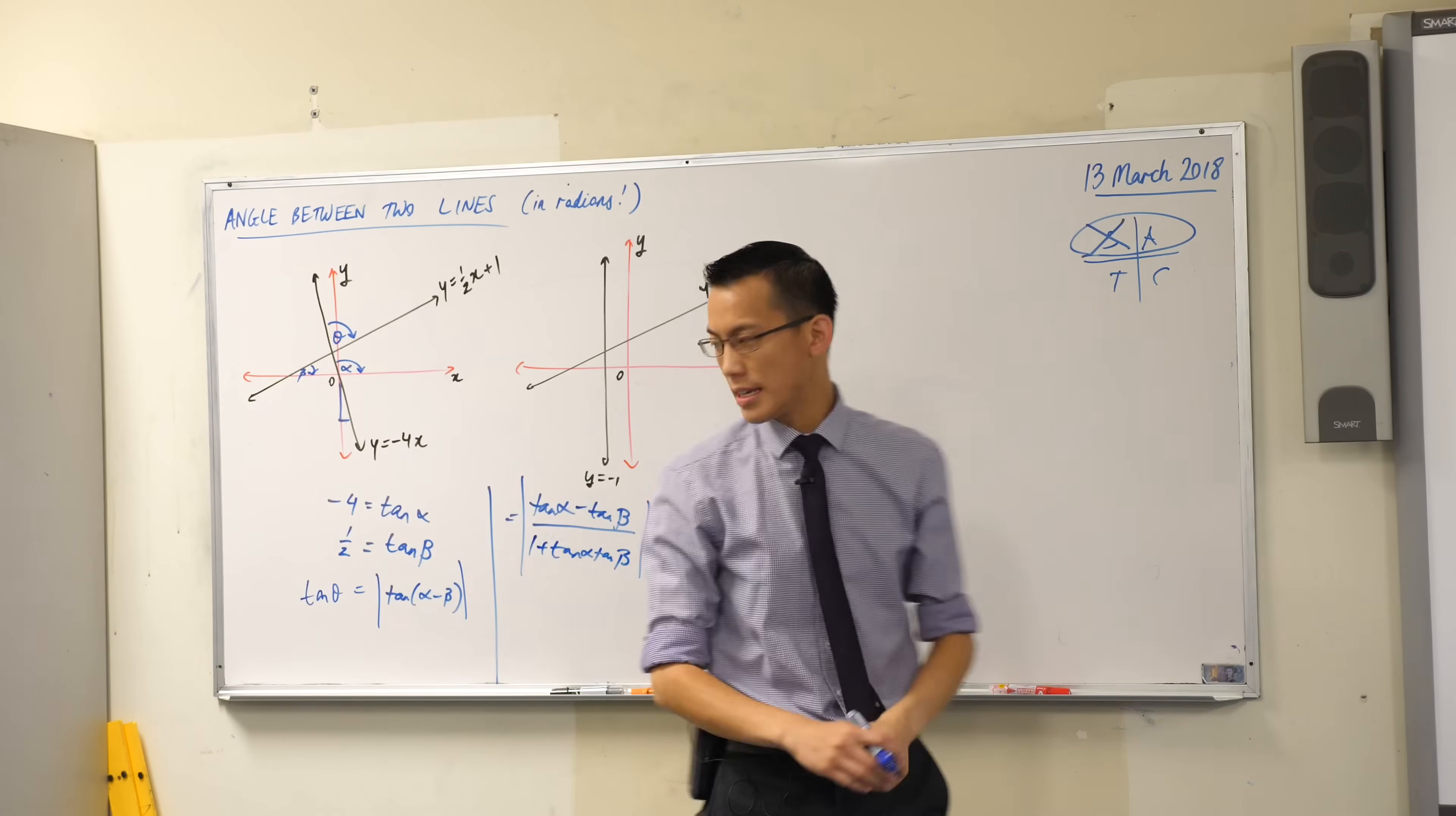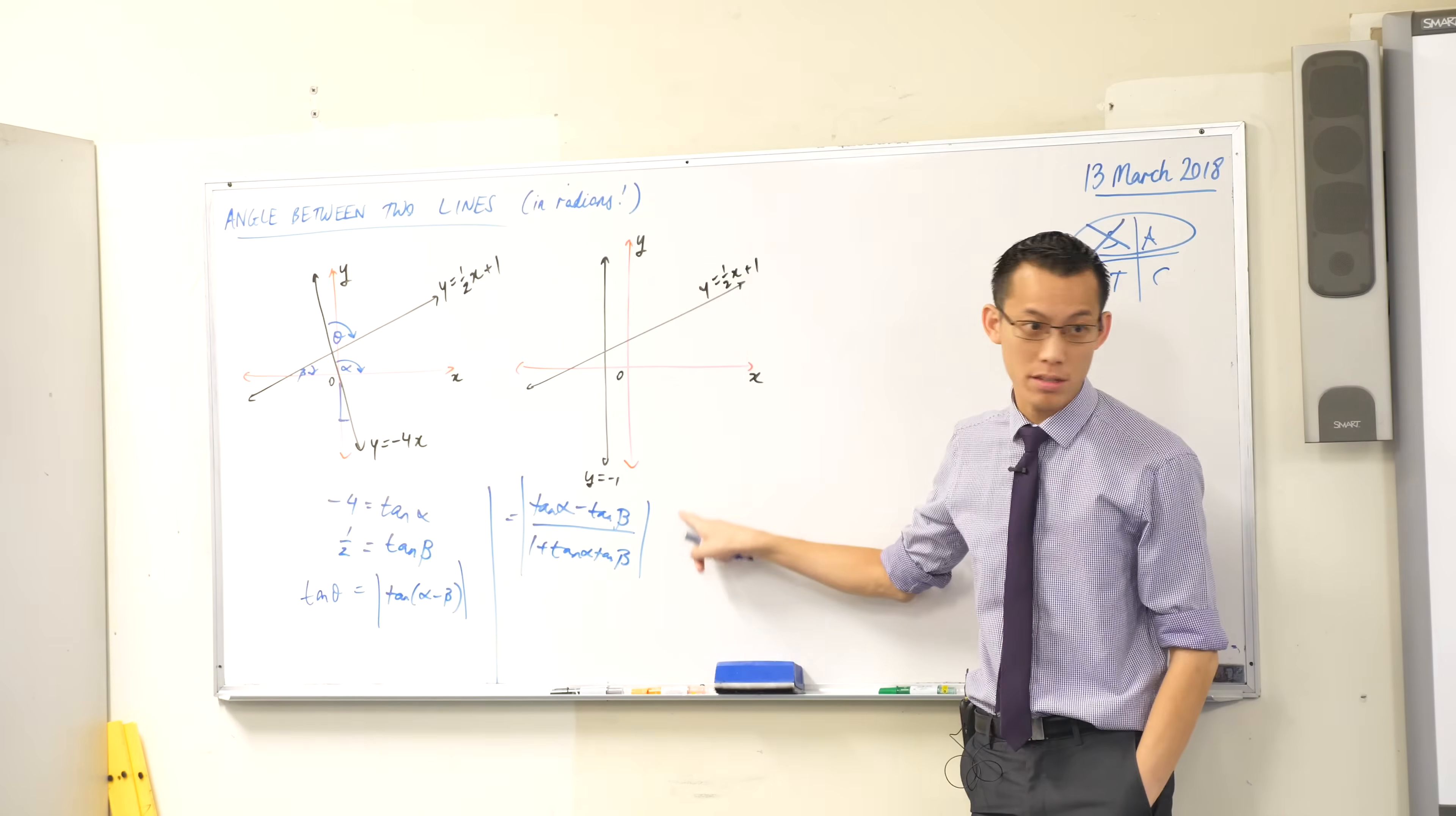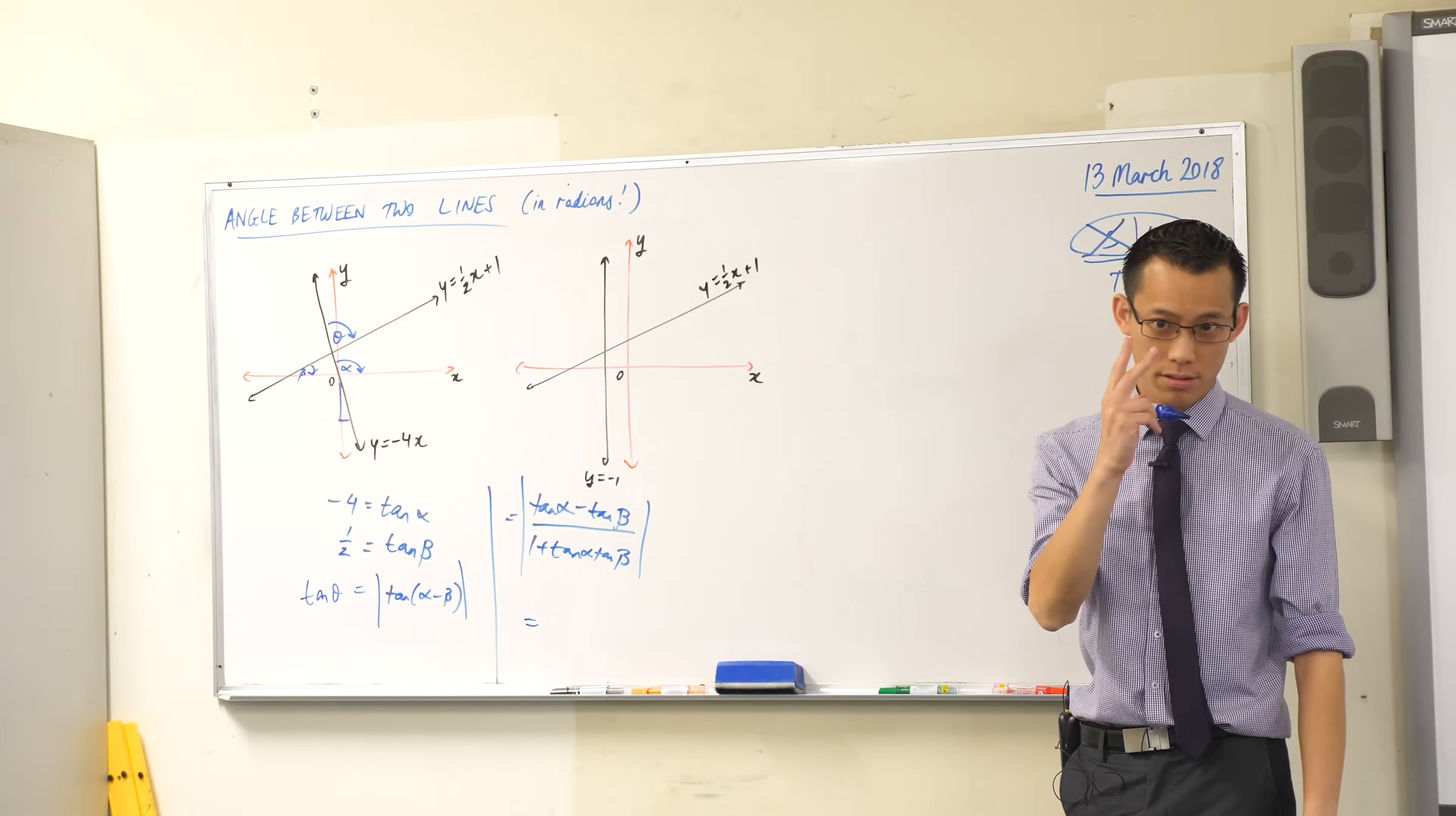Now the lovely thing about this is that in this context, I know exactly what tan alpha and tan beta are. If I were to try and go to alpha and beta and do tan inverse or something like that, I'd get weird, awkward angles. But I don't need to because this formula doesn't require alpha and beta, it requires tan alpha and tan beta. So I can replace all those just with the gradients. That's what they're equal to.